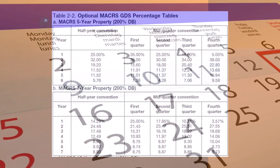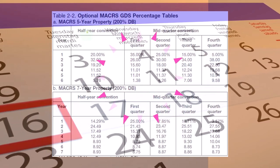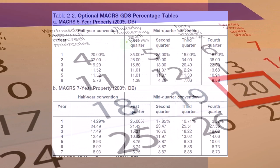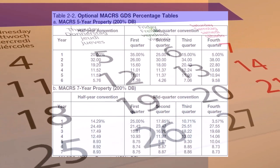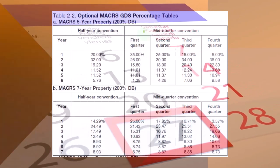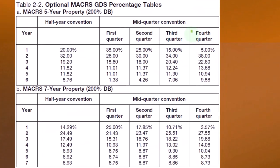Here we have table 2-2: we've got the years, we've got the half-year conventions, and then the mid-quarter convention, which gets more complicated because there are four quarters. So we have the first, second, third, and fourth quarters, and we use the percentages applicable for the mid-quarter. Similarly for seven-year property, we have the half-year convention and then the mid-quarter.